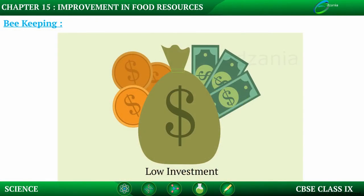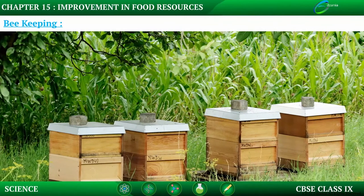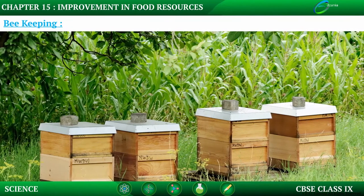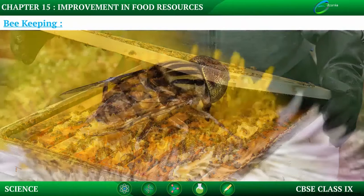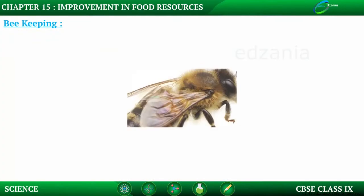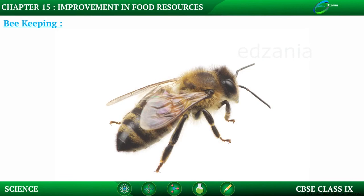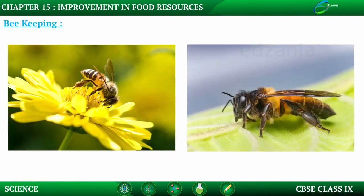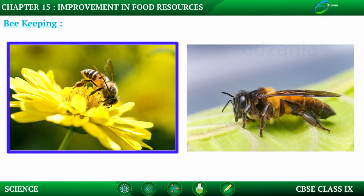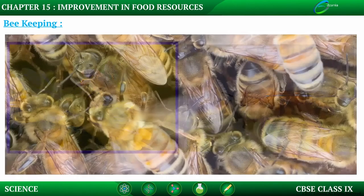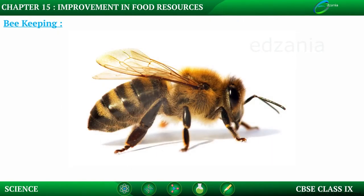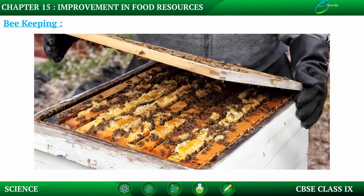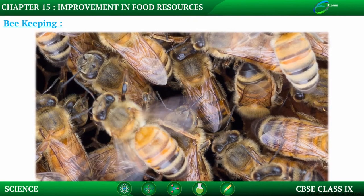Beekeeping needs very low investment, and thus farmers do beekeeping as a business for extra income. The local variety of bees used for commercial honey production is Apis cerana indica, commonly known as Indian bees. Other types include Apis dorsata, the rock bee, and Apis florea, the little bee. An Italian bee variety, Apis mellifera, has also been introduced to increase honey yield, and is commonly used for commercial production because of its high honey collection capacity and ability to stay in a given beehive for long periods and breed very well.